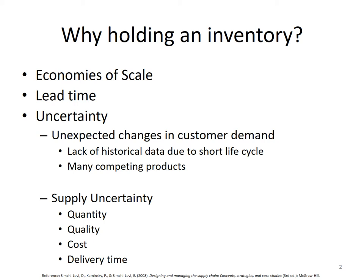The demand can be stochastic — there may be some unexpected changes in customer demand where forecasting may help us, but unfortunately due to short life cycles of products, many times we are not able to forecast correctly. There are also many competing products that make forecasting more difficult. Then comes supply uncertainty — the supplier may not be flexible enough and may not fulfill our demand, supplying us with less quantity.